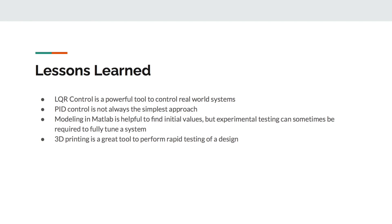Our team learned a lot of useful lessons through this project. The first of which is that LQR control is a powerful tool to control real-world systems. So is PID, but we also learned that PID control is not always the simplest approach to solving a control systems problem. We also learned that while the model in MATLAB can help you figure out the initial values for your system, experimental testing to figure out better values is another great way to get your system to be more robust. Finally, we learned that 3D printing is a great tool to perform rapid design and testing.